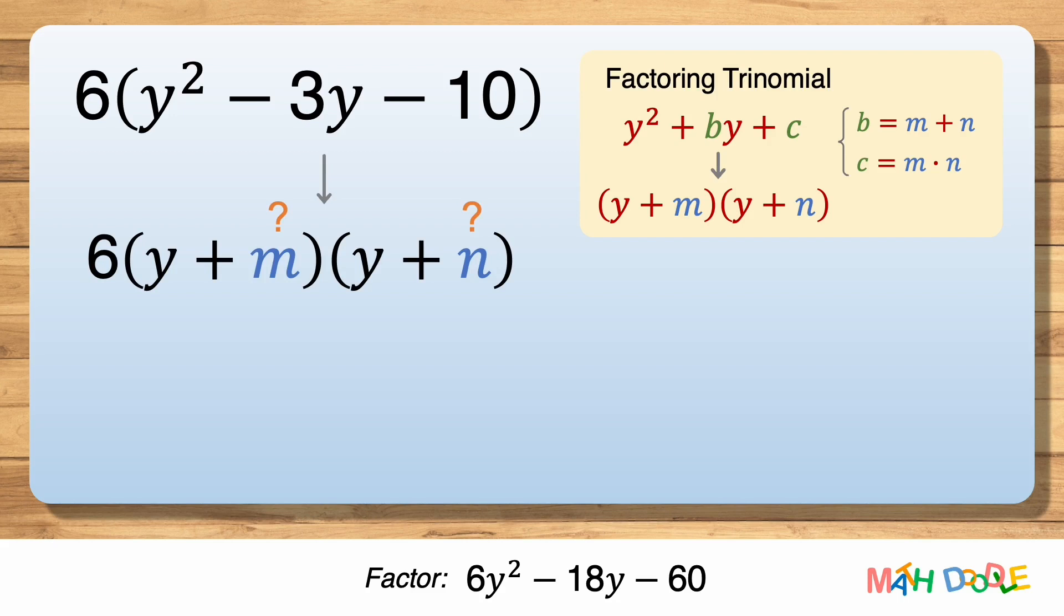But we know m + n is -3 and m times n is -10. So our goal is to find two numbers that add to -3 and multiply to -10.